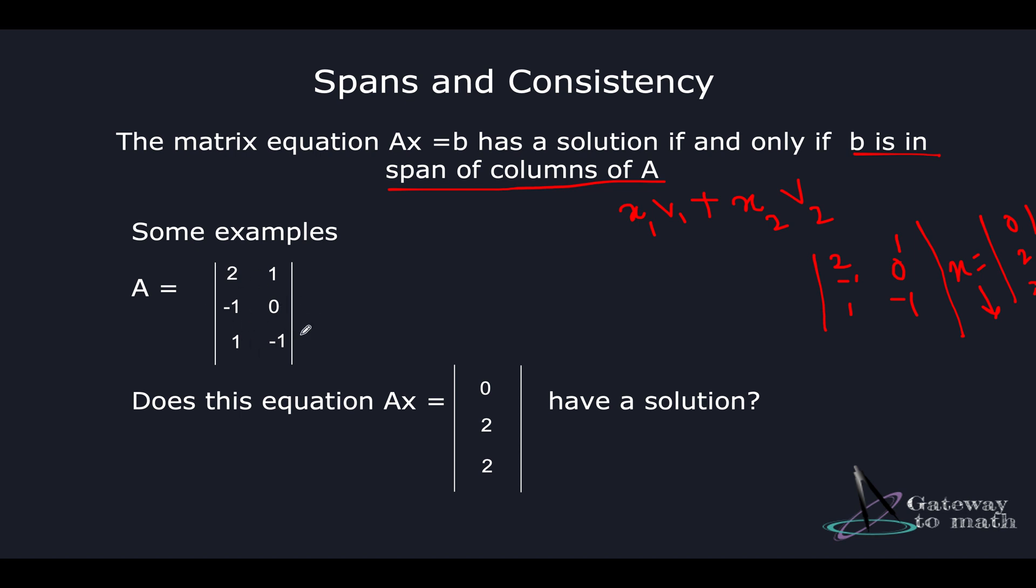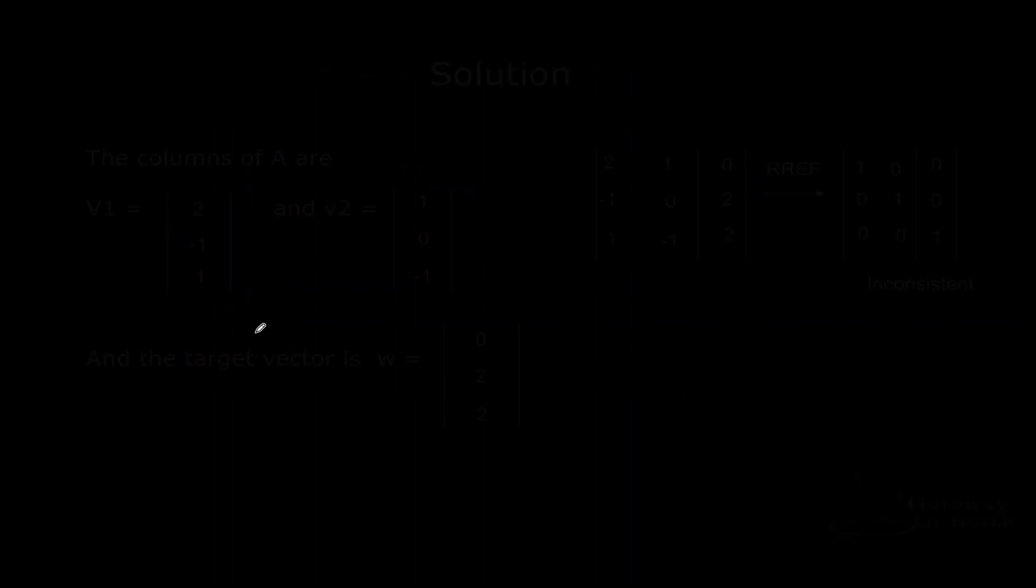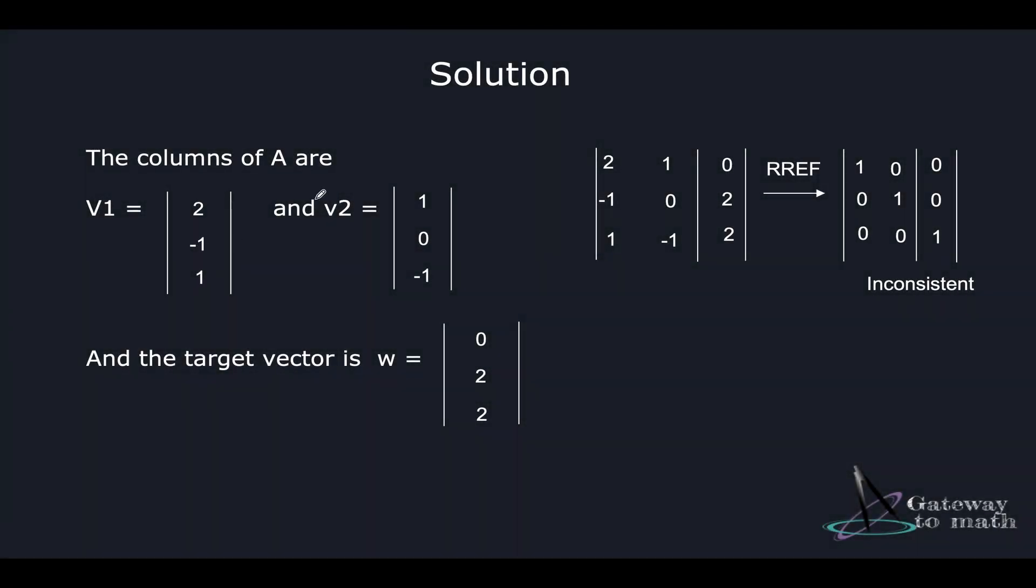Let us break this down into vector representation. v1 becomes the first column [2, -1, 1], and v2 becomes the second column [1, 0, -1]. The target vector is [0, 2, 2]. This is how I can represent them in the form of an augmented matrix. We've discussed augmented matrix in previous sessions, and I'll link the URL in the description box.